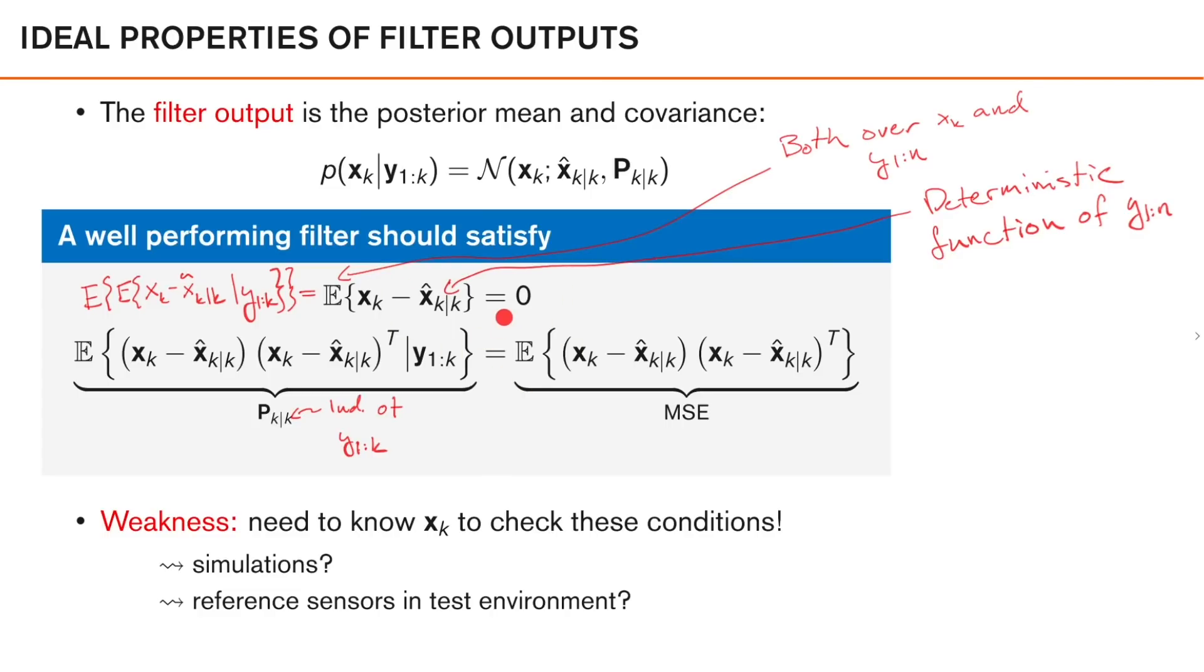So although it's fairly easy to check these conditions, they both have one major drawback, and that is that we need to know the true state xk in order to calculate these. Obviously, in most real situations, we don't know the true state, and if we did, it would be no reason for us to try to estimate it in the first place, right? However, there are some important situations where we actually know the true state.